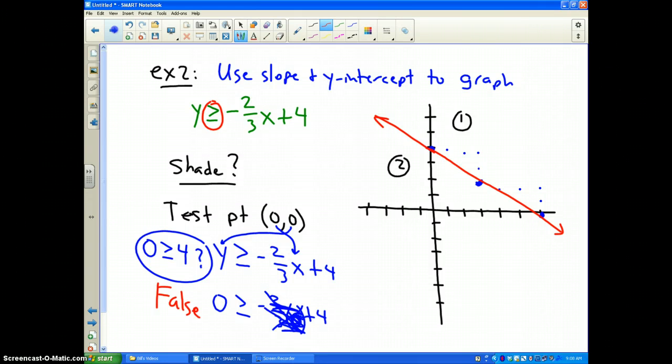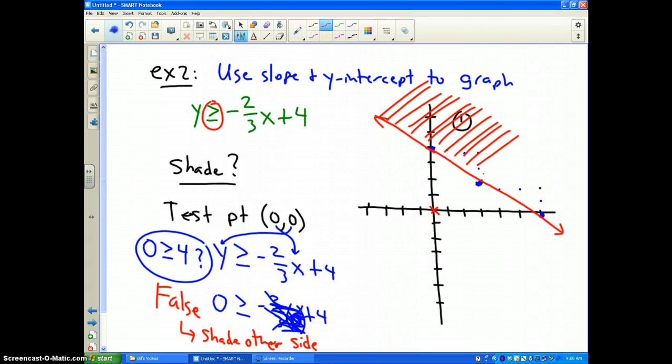And, since it's false, that means shade the other side. So, we tried the point (0, 0), which is where my red x is. It did not work. So, therefore, I'm going to shade the other side of my boundary line. Because, all these points over here, where all my red lines are drawn...